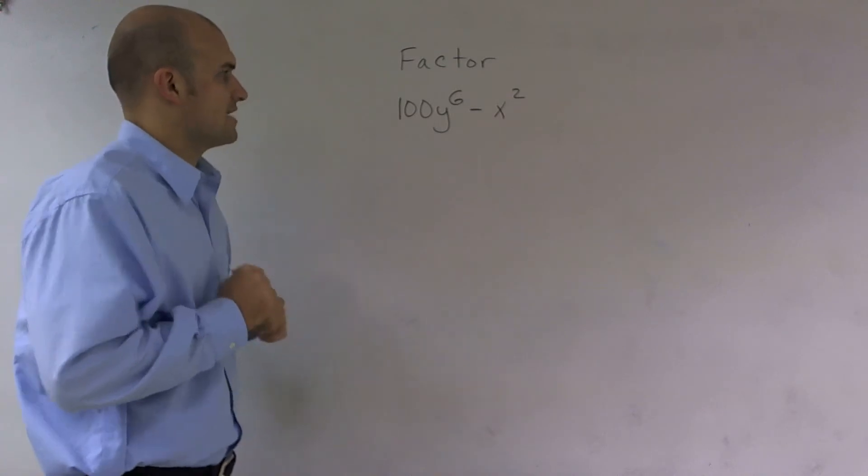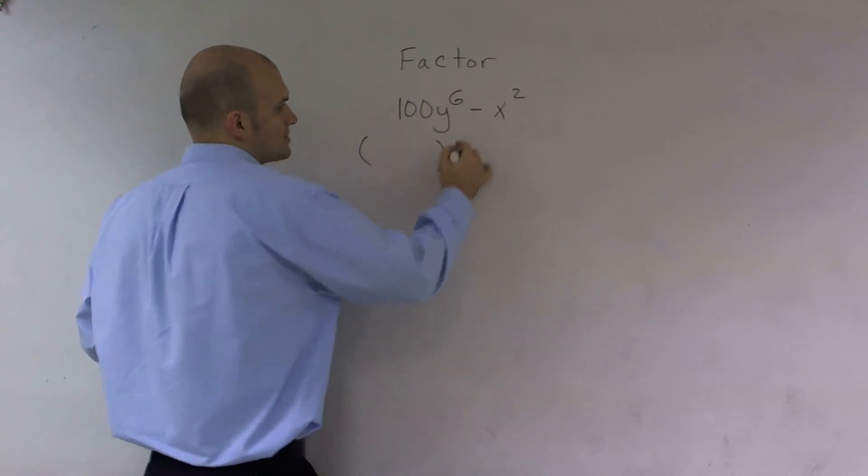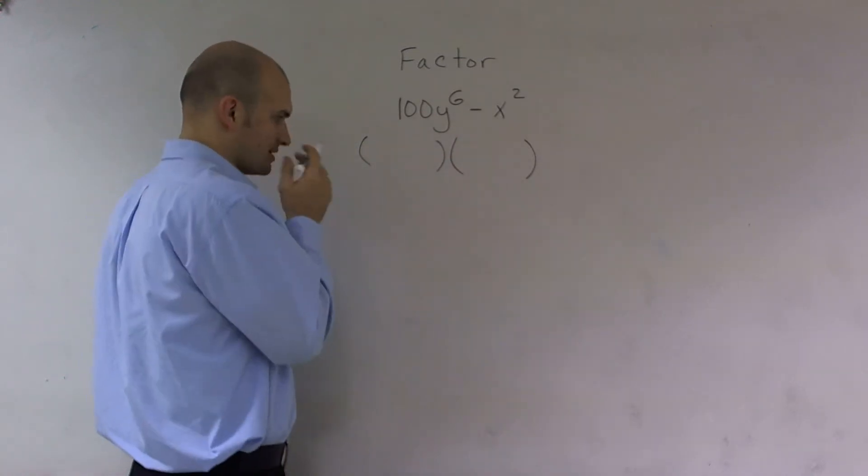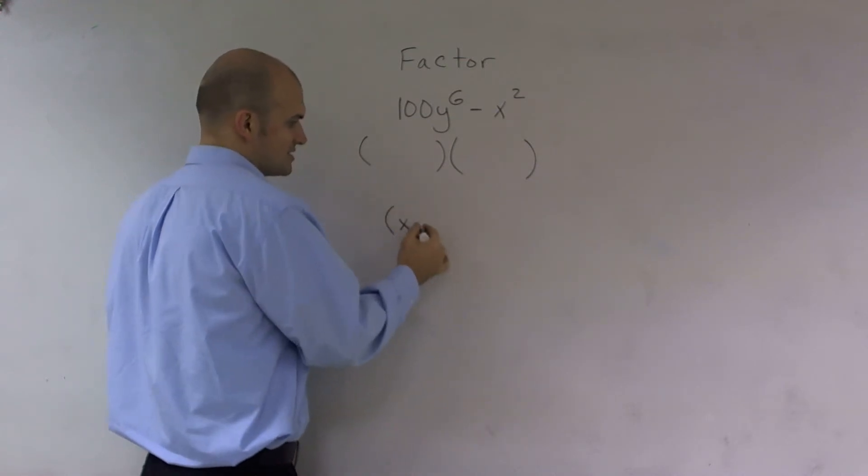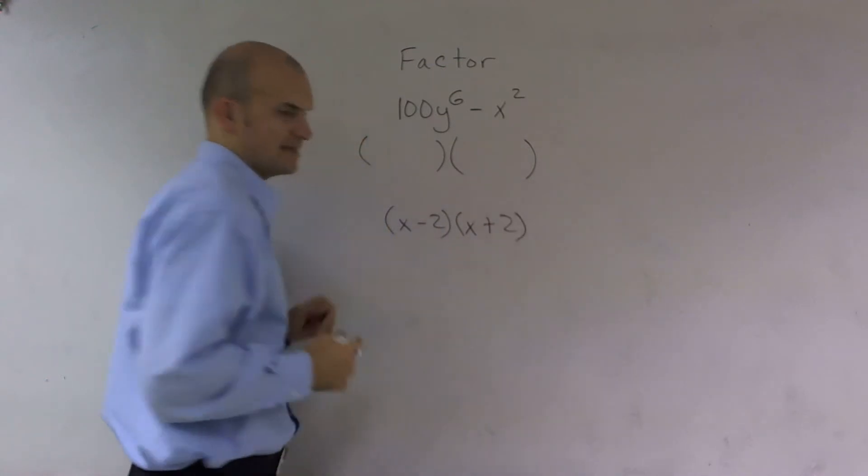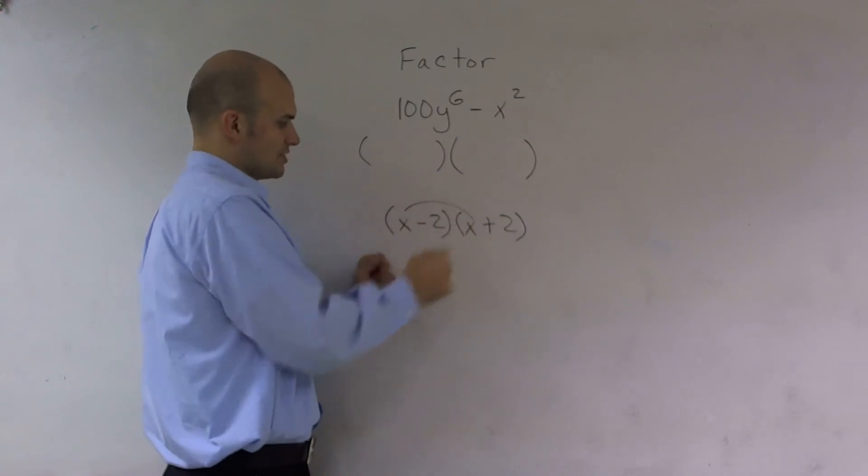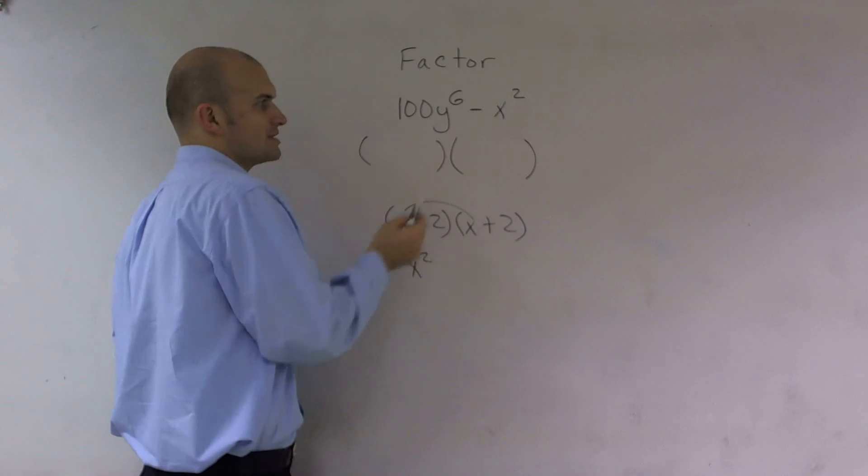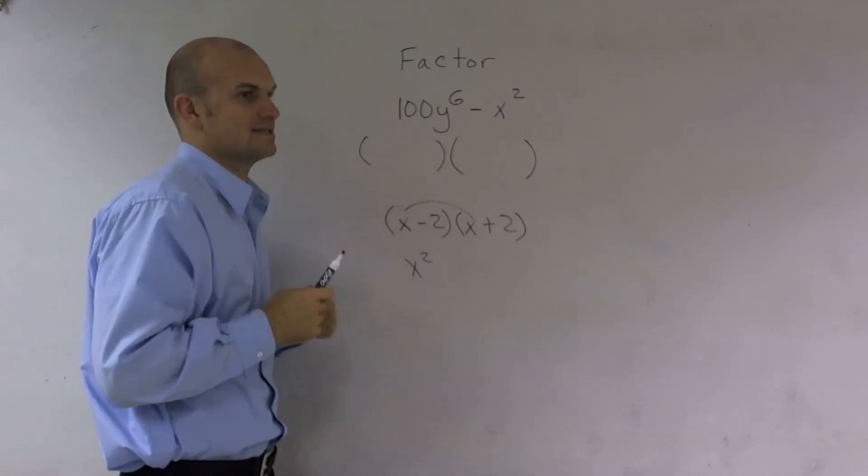So when I'm looking at factoring, I'm going to want to see, can I write this as a product of two binomials? And remember, if we think about two binomials, let's think of x minus 2 and x plus 4. I always try to pick something that's going to be easy. Well, remember, you're going to multiply these two terms. These two terms give you your first term. So I think of what two numbers could I split that would give 100 and y to the sixth.